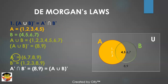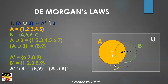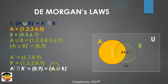Now for the right-hand side: A' is everything outside of set A. Since A is {1,2,3,4,5}, A' is {6,7,8,9}. Similarly, B' is everything outside of set B. Since B is {4,5,6,7}, B' is {1,2,3,8,9}. The intersection of A' and B' — what is common between them — is {8, 9}.